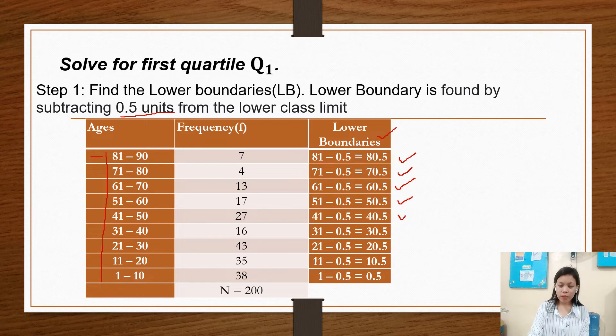41 minus 0.5 is 40.5, 31 minus 0.5 is 30.5, 21 minus 0.5 is 20.5, 11 minus 0.5 is 10.5, 1 minus 0.5 is 0.5. So those are for finding lower boundaries.